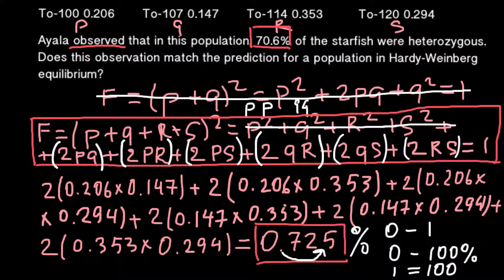Hardy-Weinberg equilibrium is usually found when a population is very large, when there is no migration, no mutation, and no other factors influencing genotype and allelic frequency — for example, no preferential mating.